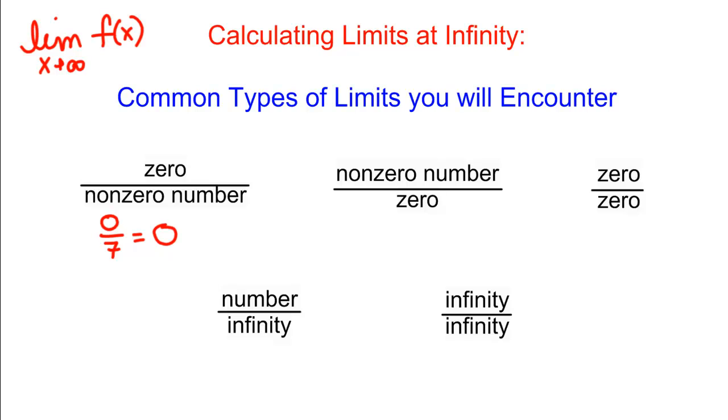Now say you encounter a new problem where the form of the answer is 7 divided by 0, a non-zero number over 0. What does that tell you? What's happening there? Well, if we're going to a number here, this would be a vertical asymptote, and if we're going to infinity, we would have an answer again, just like a vertical asymptote of infinity, negative infinity, or does not exist.